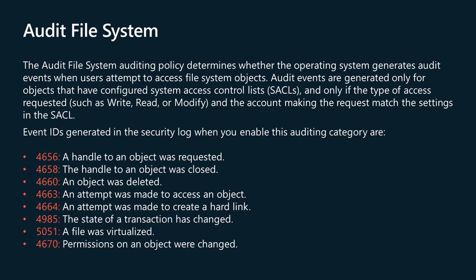The audit file system auditing policy determines whether the operating system generates audit events when users attempt to access file system objects. Audit events are generated only for objects that have configured system access control lists, SACLs, and only if the type of access requested — such as write, read, or modify — and the account making the request match the settings in the SACL. If success auditing is enabled, an audit entry is generated each time any account successfully accesses a file system object that has a matching SACL. If failure auditing is enabled, an audit entry is generated each time any user unsuccessfully attempts to access a file system object that has a matching SACL. These events are essential for tracking activity for file objects that are sensitive or valuable and require extra monitoring.